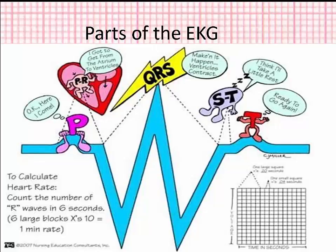The T wave represents repolarization of the ventricles. The QT interval represents the total time for depolarization and repolarization of the ventricles. The Q wave is the first negative deflection following the P wave and should be narrow and short. Q waves often develop with ST segment elevation MI.